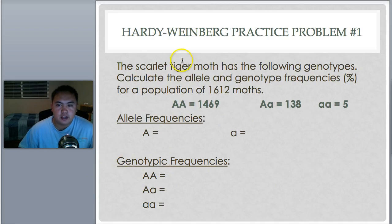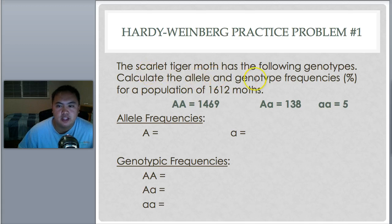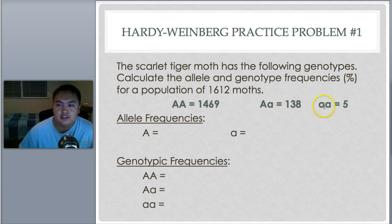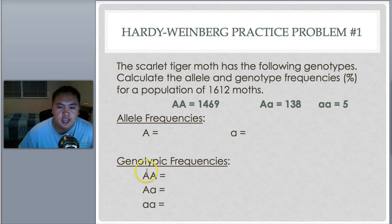Let's do a sample problem with the scarlet tiger moth. We collect and check allele and genotype frequencies for a population of 1,612 moths. We found that 1,469 have homozygous dominant (AA), 138 have heterozygous (Aa), and only 5 have homozygous recessive (aa). The question is: can you find the allele frequency of the dominant and the recessive, and what are the genotypic frequencies?